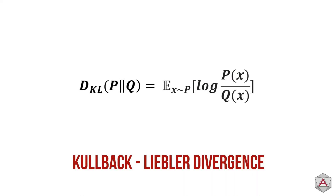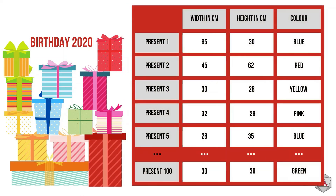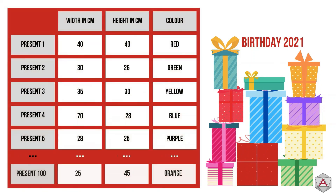Now let's show KL in action. Let's say for your birthday last year you got a lot of presents, and because we're statisticians we recorded the height, width and colour of all of your presents. This year for your birthday you got the same amount of presents but in similar but different colours and sizes, so we recorded those too.